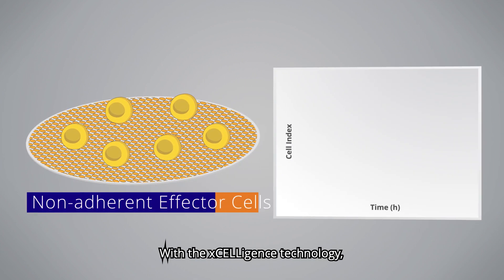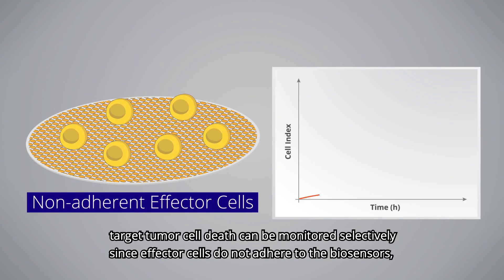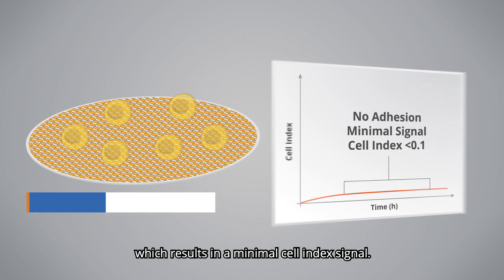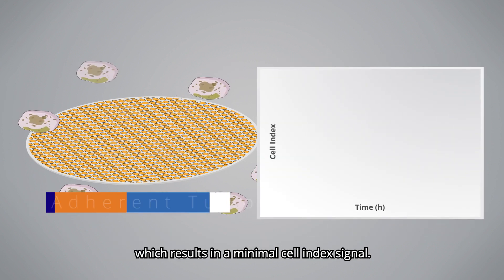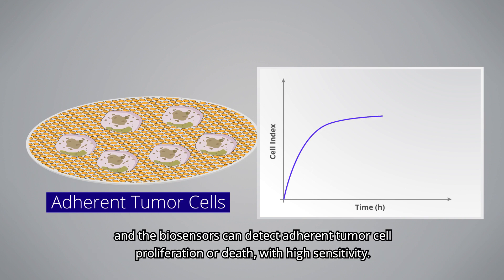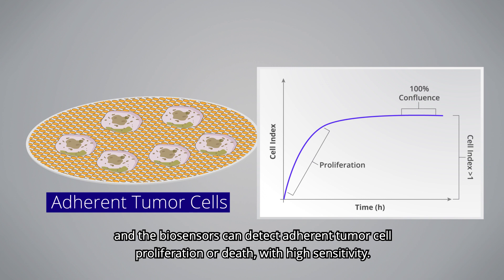With the Acceligence technology, target tumor cell death can be monitored selectively since effector cells do not adhere to the biosensors, which results in a minimal cell index signal. Conversely, adherent tumor cells attach easily to the e-plate, and the biosensors can detect adherent tumor cell proliferation or death with high sensitivity.